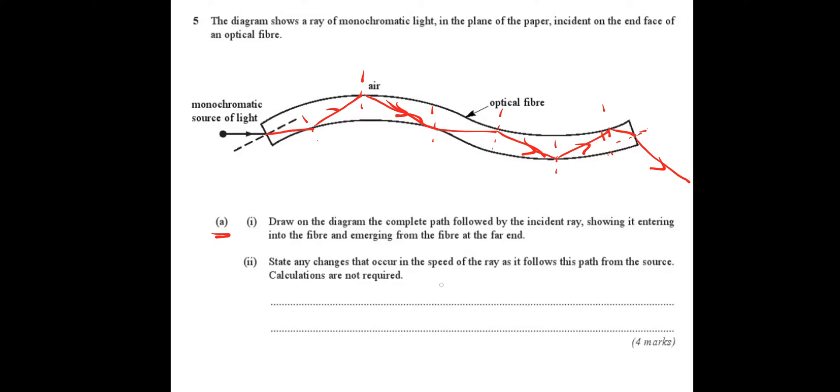Next bit. State any changes that occur in the speed of the ray as it follows this path from the source. As it enters a more dense medium into the optical fiber, its speed would decrease. So speed decrease in the fiber.